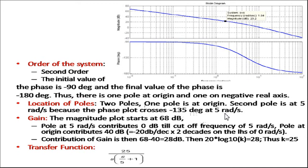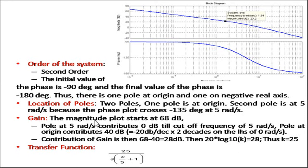The magnitude plot starts at 60 dB. The pole at origin contributes 40 dB — that is minus 20 dB/decade multiplied by two decades on the scale. The pole at 5 rad/s contributes 0 dB at its cutoff frequency. The contribution of gain is then 68 minus 40, which equals 28 dB. Setting 28 dB equal to 20 log₁₀(K) gives K equal to 25. Therefore, the transfer function is 25 / [s(s/5 + 1)].